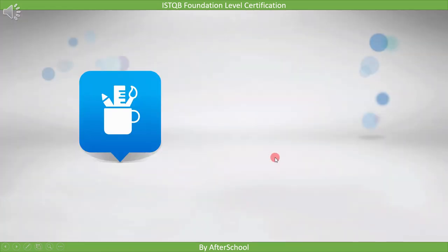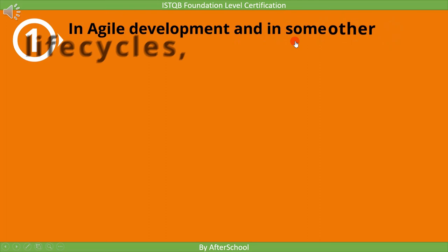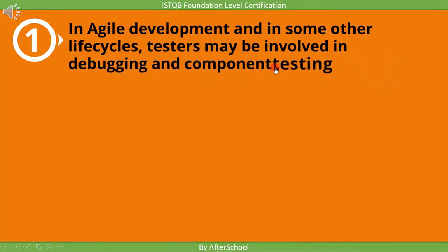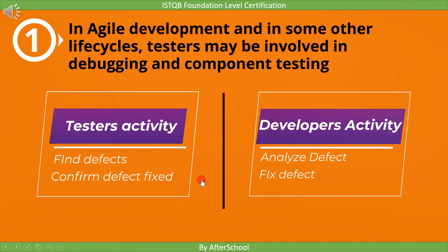Before we end this video, let's have a look at the important points. In Agile development and in some other life cycles, testers may be involved in debugging and component testing. We learned about testing and debugging activities: testing activities are finding defects and confirming defects are fixed, whereas the developer's activity is to analyze defects and fix the defects.